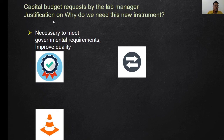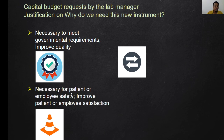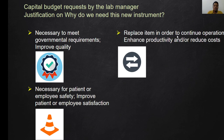Capital budget request justification — why do we need a new instrument? Among the justifications that can be used by the lab manager to request a capital budget: first, if there is a need to meet governmental requirements and also improve quality; second, if it is necessary for patient or employee safety, which also improves patient or employee satisfaction; third, to replace an item in order to continue operations; and fourth, to enhance productivity and/or reduce cost.